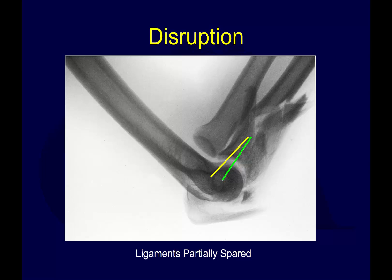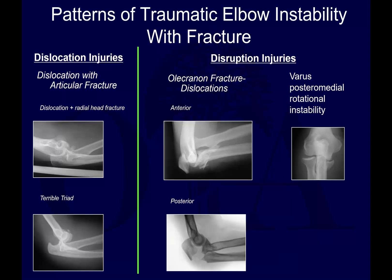To group these: on the left you have dislocation injuries such as terrible triads, and on the right you have proximal ulna and varus posteromedial instability patterns. We'll pause here and get deeper into the terrible triad, radial head, and coronoid injuries in the next video. Thank you.